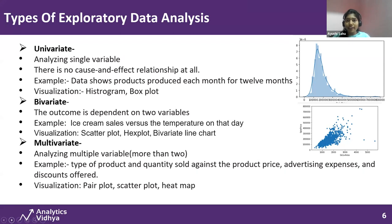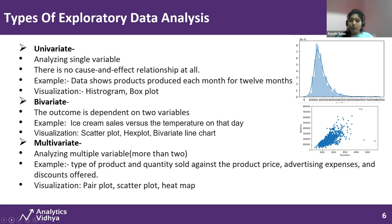The second type is bivariate. Bivariate means your output is dependent on two variables. For example, if temperature increases, ice cream sales will increase — they are proportional and dependent on each other. If temperature goes down, sales also go down. This relationship is known as bivariate. For analyzing this kind of data, we use scatter plot, hex plot, and bivariate line plot. The third type is multivariate — analyzing multiple variables where your output depends on multiple columns.